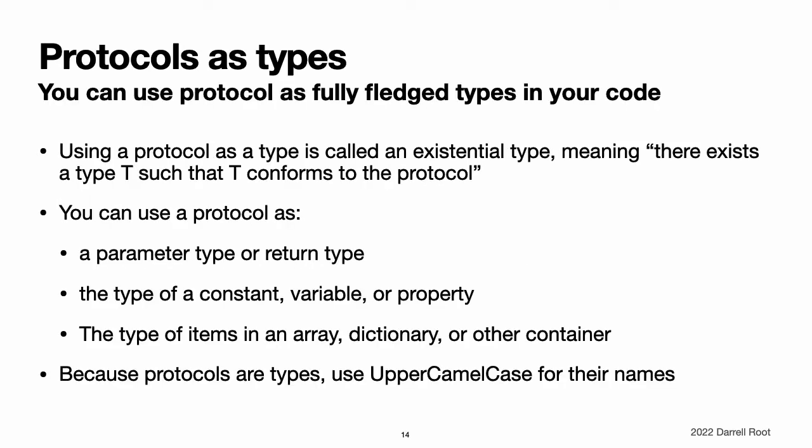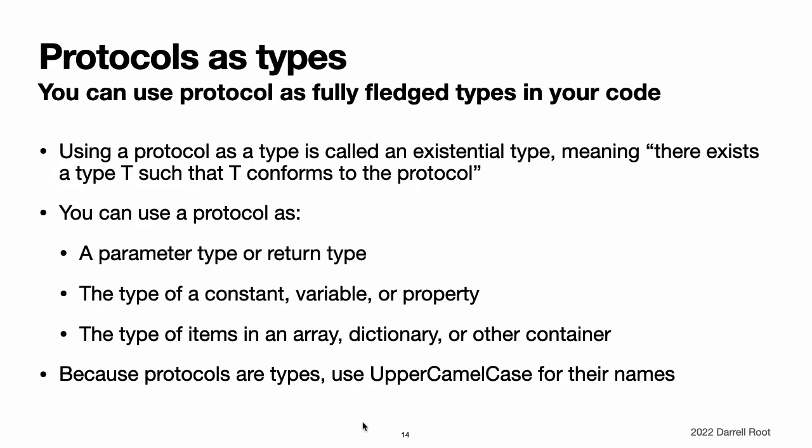Protocols as types. Protocols do not actually implement any functionality themselves. Nonetheless, you can use protocols as a fully-fledged type in your code. Using a protocol as a type is sometimes called an existential type, which comes from the phrase "there exists a type T such that T conforms to the protocol." You can use a protocol in many places where other types are allowed, including as a parameter type or return type in a function, method, or initializer, as the type of a constant, variable, or property, and as the type of items in an array, dictionary, or other container. Note: because protocols are types, use upper camel case for their names.